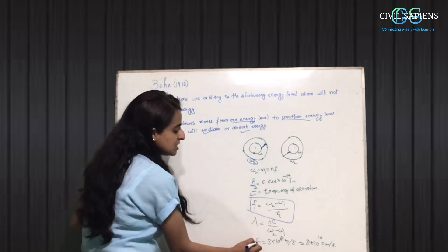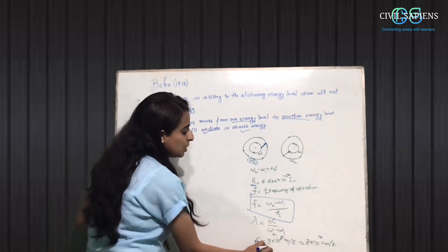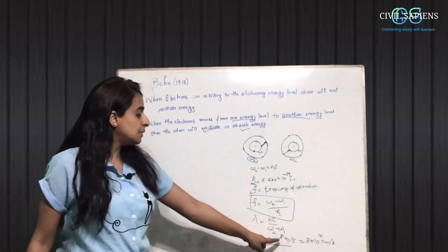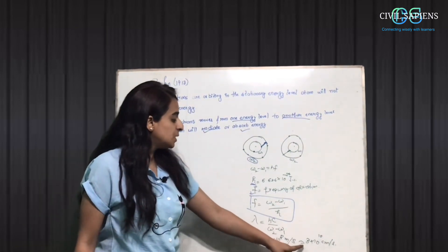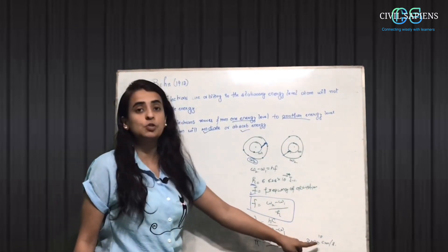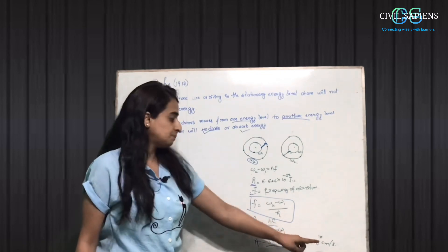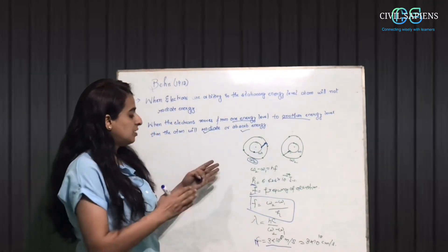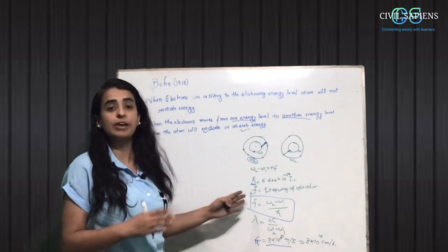The wavelength will be lambda equals hc by E2 minus E1. Here, the value of c is the speed of light, that is 3 into 10^8 meter per second. If you see it in cm per second, that will be equal to 3 into 10^10 cm per second. So from here, we can find the frequency and the wavelength of radiation.